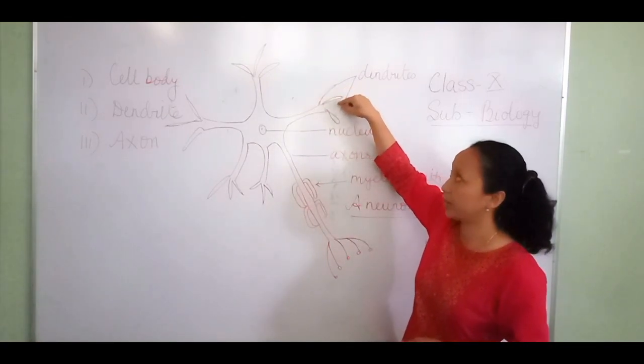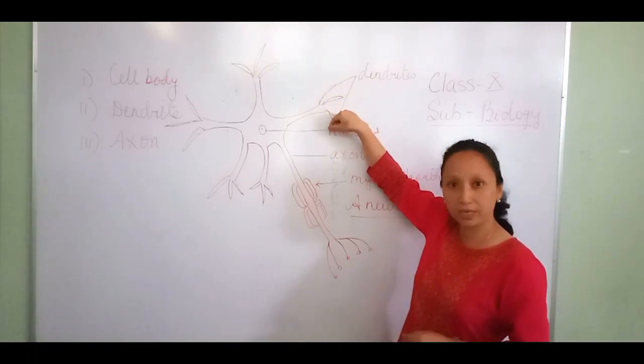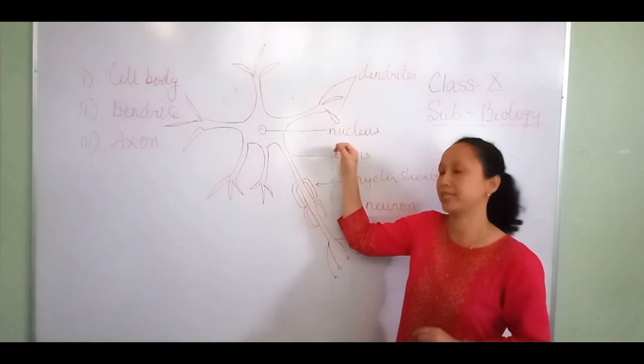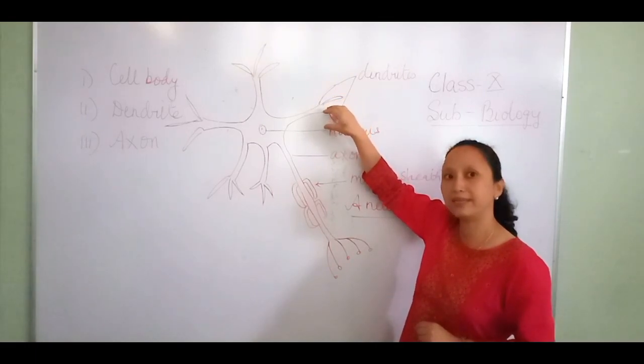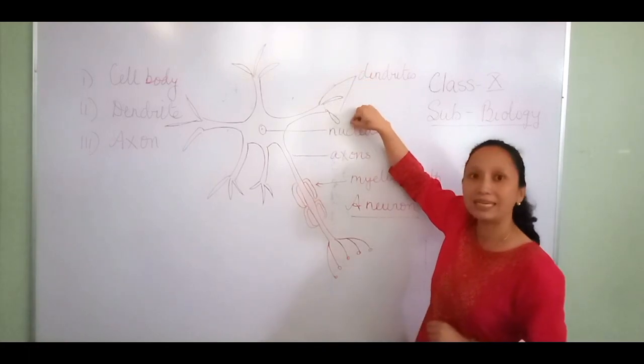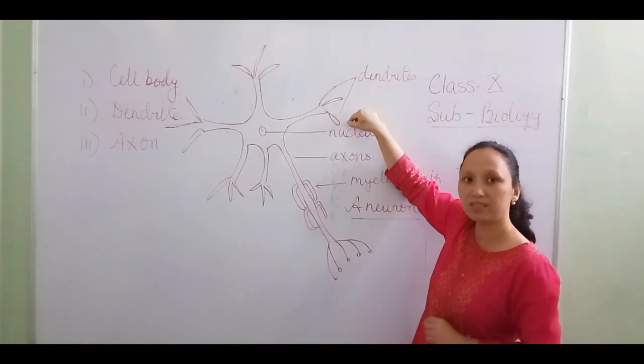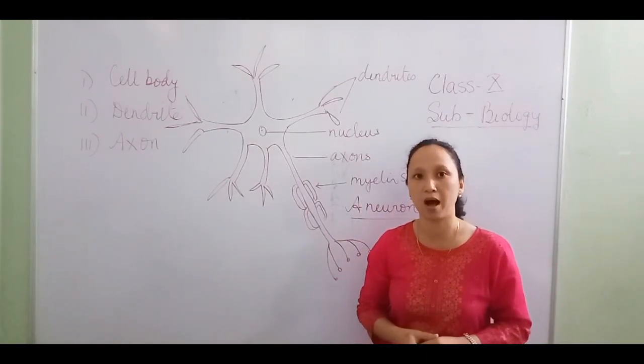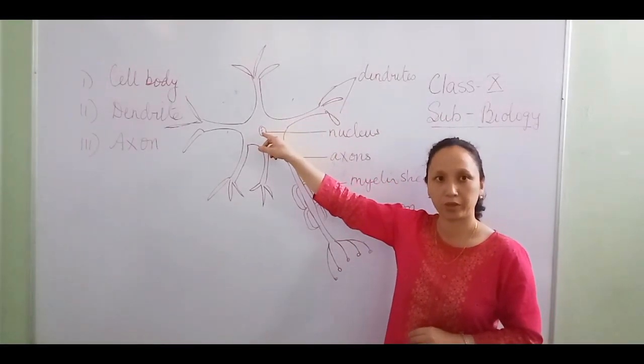Dendrites are these branched structures. One cyton produces about 5 to 7 short, slender, and branched structures called dendrites. The function of these dendrites is to receive the impulses and transmit them to the cell body.